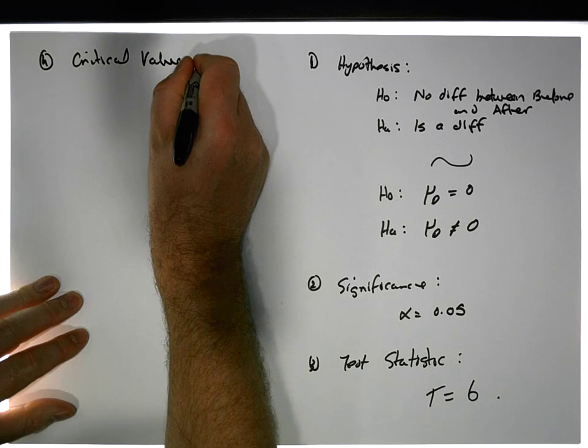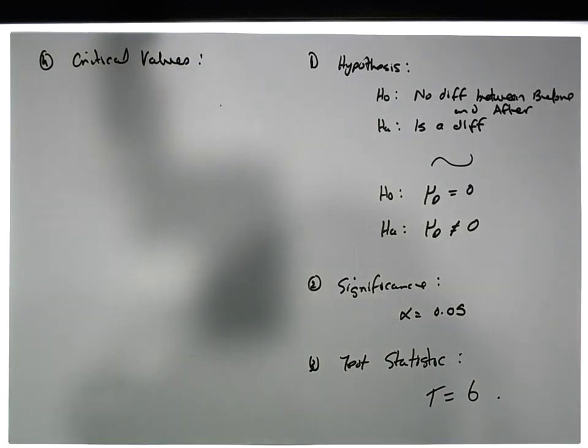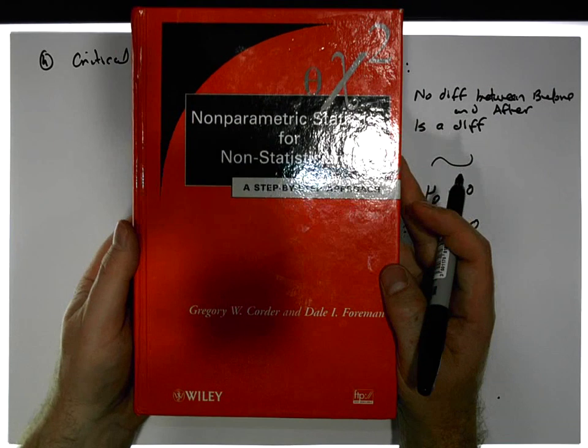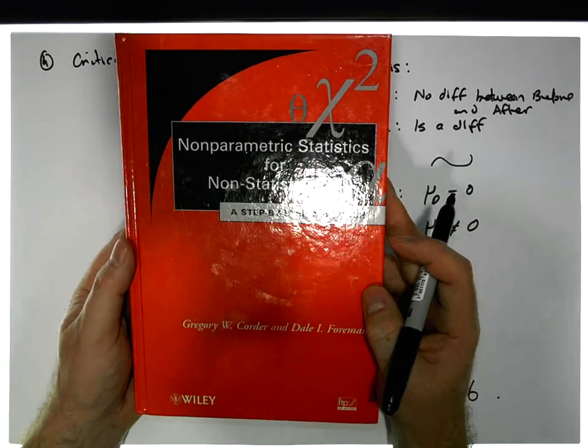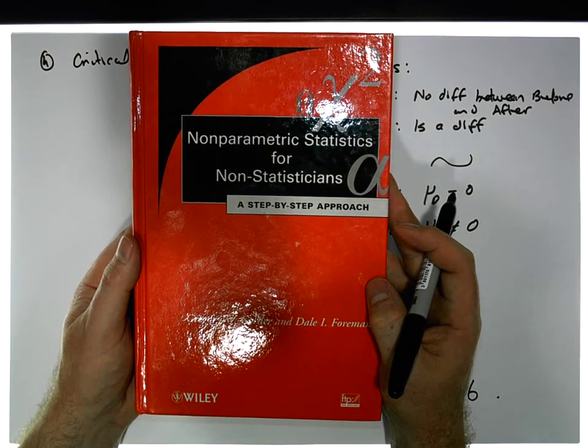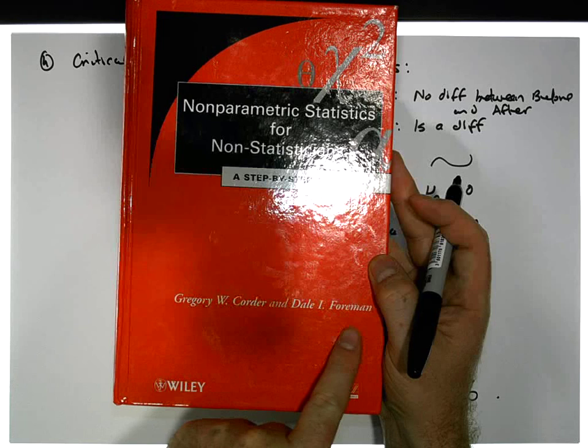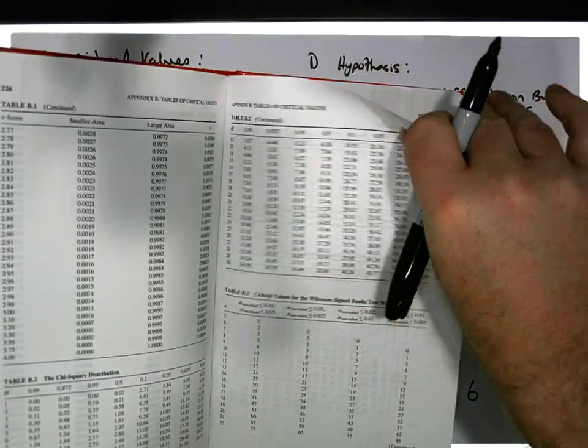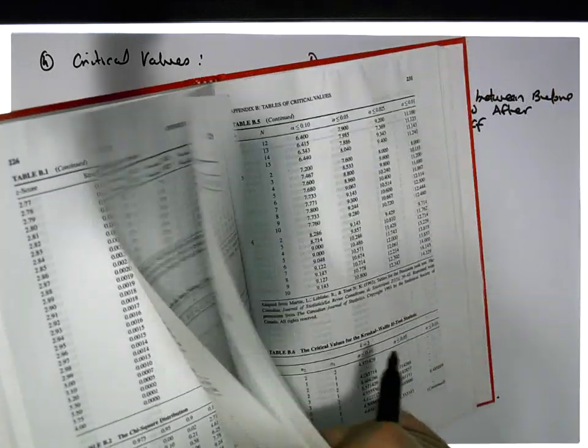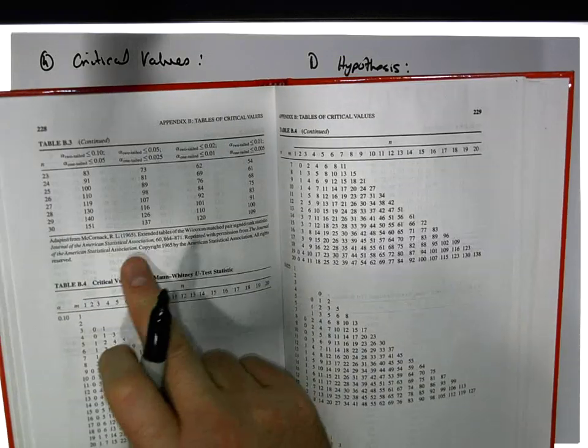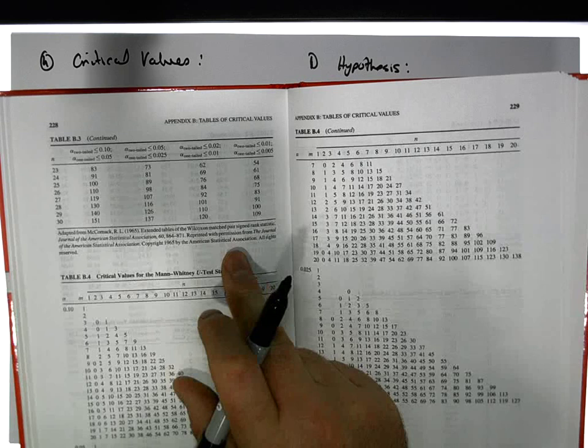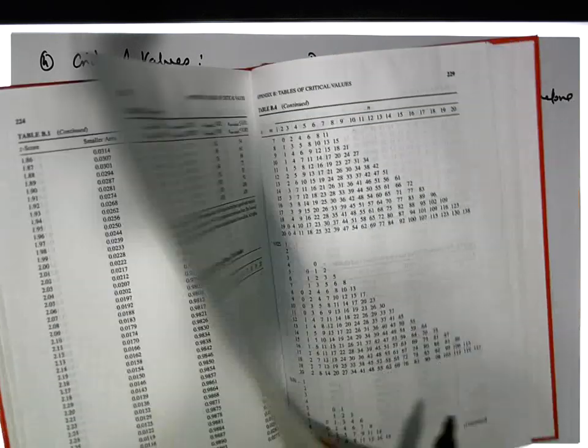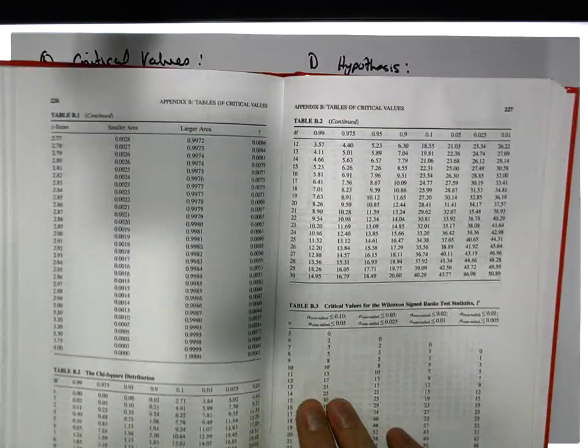We're going to examine a set of critical value tables. The tables I'm using, just so that you can see, this is a great text: Nonparametric Statistics for Non-Statisticians by Corder and Foreman. At the back they've got a set of tables adapted from the American Statistical Association.